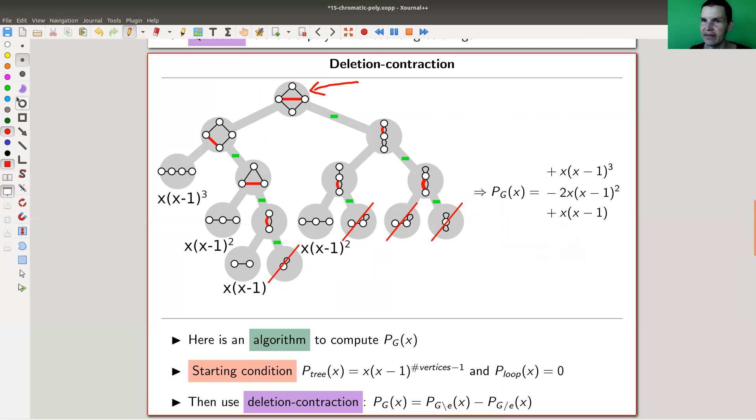and you either delete it, that's going in this direction, or you contract it. So you just merge it together along the edge, and this is going in this direction,